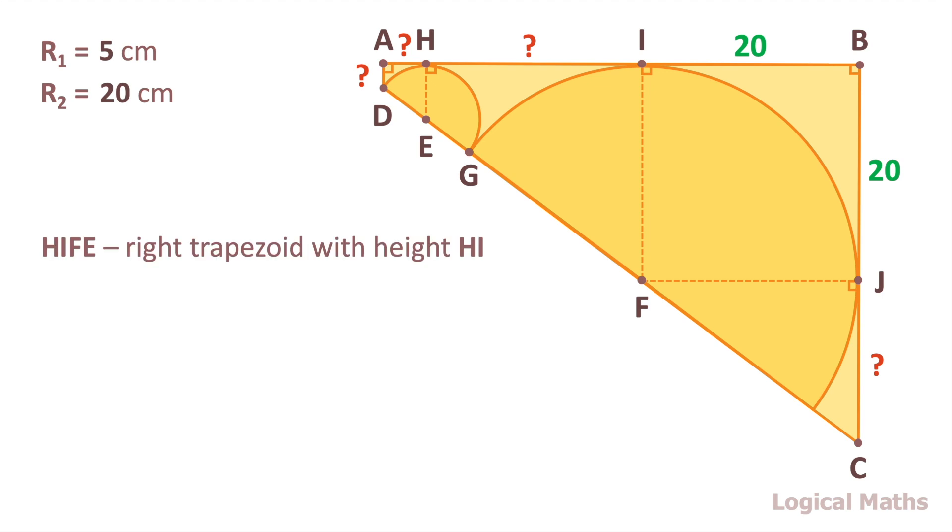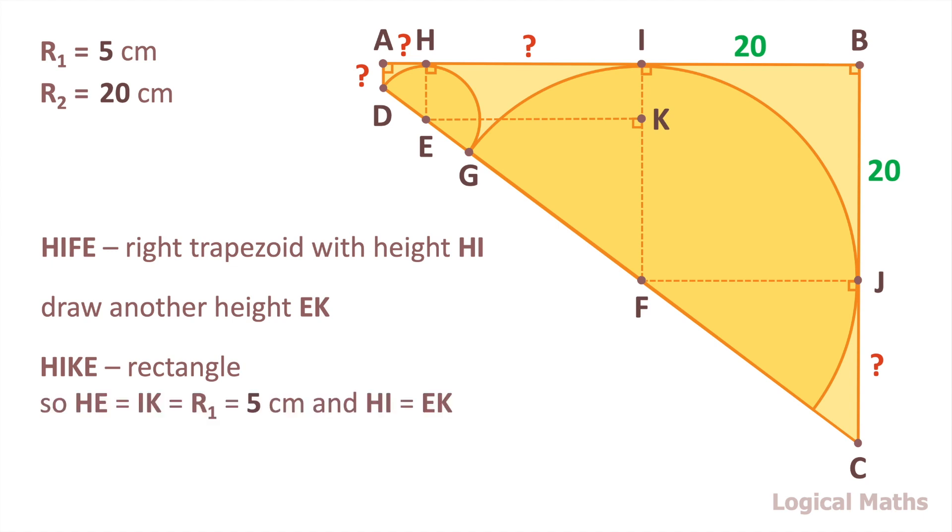HIFE is a right trapezoid with height HI. Draw another height, EK. HIKE is a rectangle, so opposite sides are equal. Thus, HE, which is the radius of the small semicircle, equals to IK and HI equals to EK.